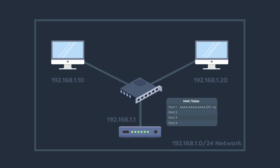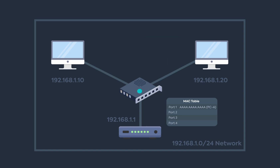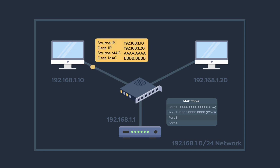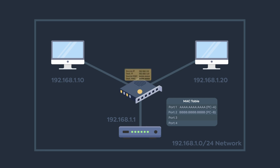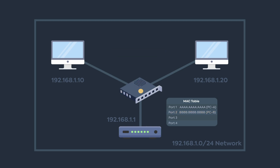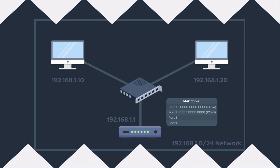Other devices ignore the broadcast packet as it is not meant for them. Only PCB replies with its MAC address. When the switch gets the reply, it adds an entry for PCB's MAC address and forwards the ARP response to PCA. Now PCA has the address and can send a packet to PCB. The switch sees the destination MAC address, matches it in its MAC table, finds the associated port, and forwards the packet to that port.